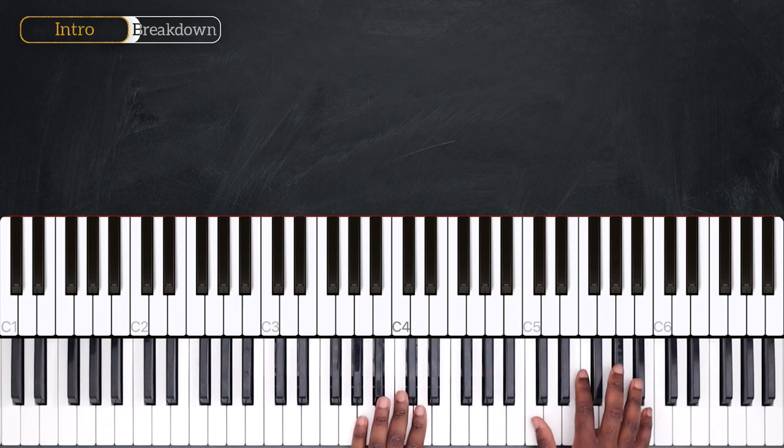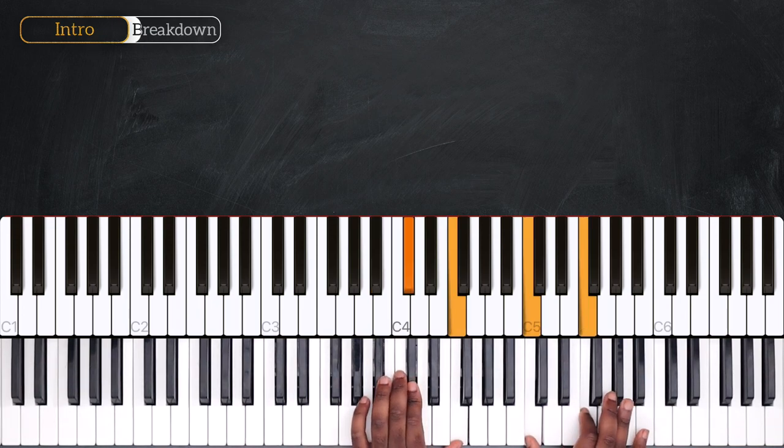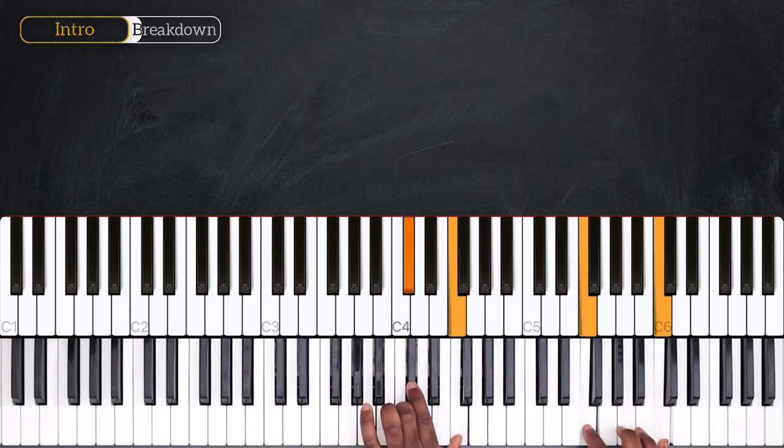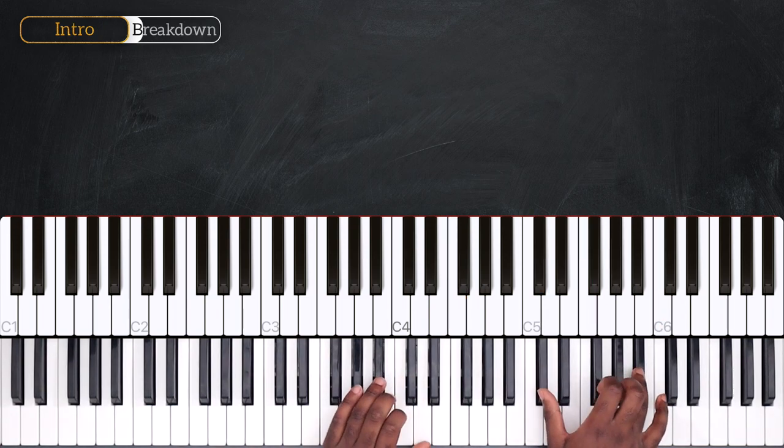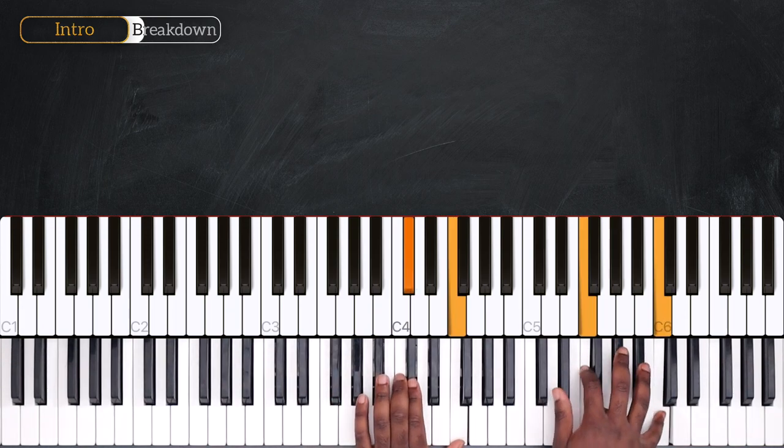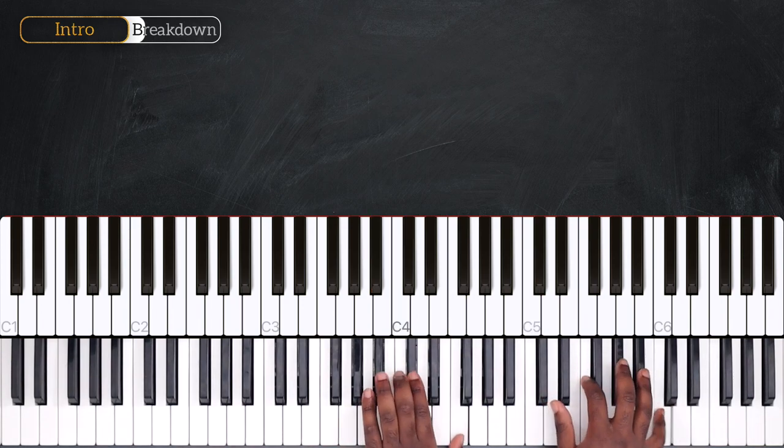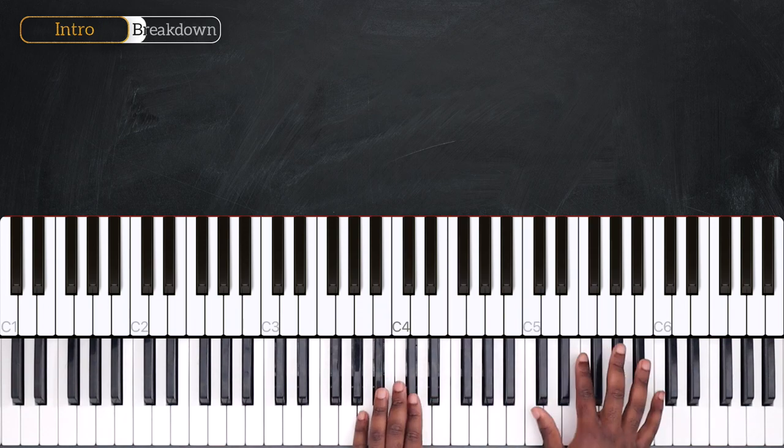And now with both hands, as you can see, I'm playing the first Db and F on the left with F and C on the right hand, and then Db and Bb is played with Bb. And that's the intro. We're going to play that 4 times back to back.